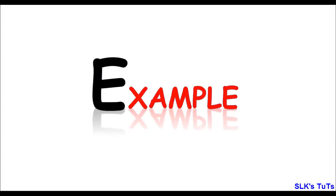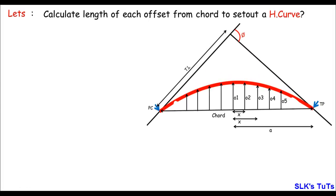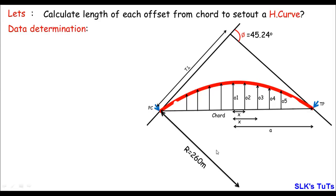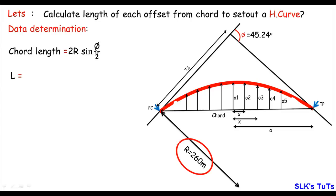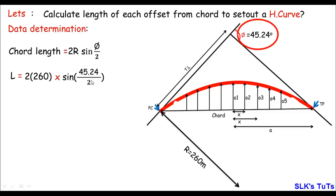For better understanding, let's do an example. We are asked to calculate the length of each offset from the chord to set out a horizontal curve, where the radius is 260 meters and the deflection angle is 45.24 degrees. Coming straight into the solution, the first thing to calculate is the chord length using L = 2R sin(Δ/2). So L = 2 × 260 × sin(45.24/2), which gives a chord length of 200 meters.